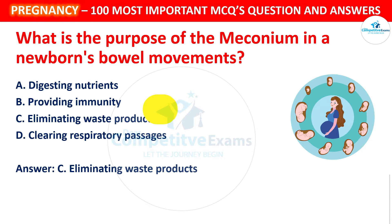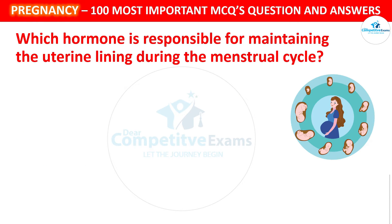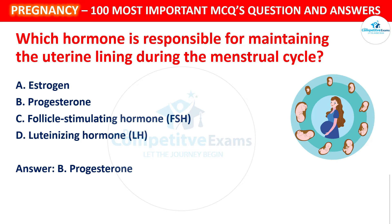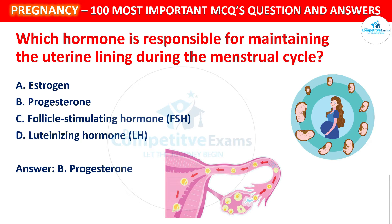Next question: Which hormone is responsible for maintaining the uterine lining during the menstrual cycle? Your options: Estrogen, Progesterone, Follicle-stimulating hormone (FSH), or Luteinizing hormone (LH). The correct answer is Progesterone. Progesterone is crucial for maintaining the uterine lining during the second half of the menstrual cycle.